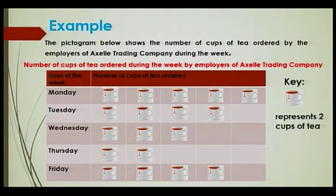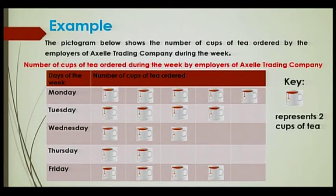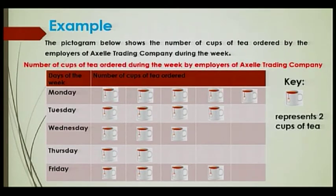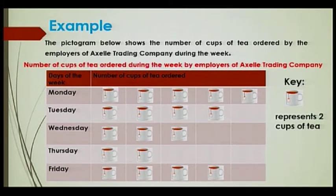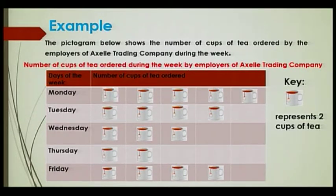Let us take an example. The pictogram below shows the number of cups of tea ordered by the employers of Accel Trading Company during the week. You can see there is a title for the pictogram and there is a key — this cup represents two cups of tea. You have the days of the week, Monday to Friday, and you have the number of cups of tea ordered.